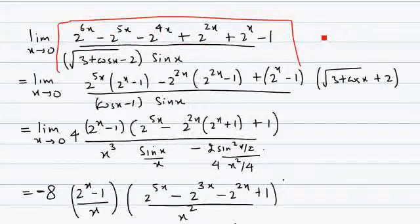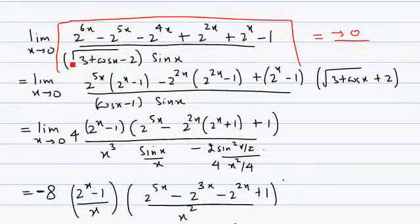In the numerator, the expression approaches 0 as x approaches 0. In the denominator, as x approaches 0, cos x is 1, and the fourth root of 4 is 2, so 2 minus 2 is 0, and sin 0 is also 0. So we have the 0 by 0 indeterminate form, which means we need to work out this limit.